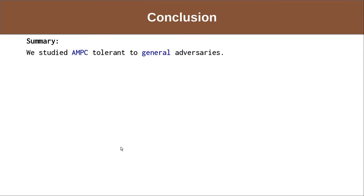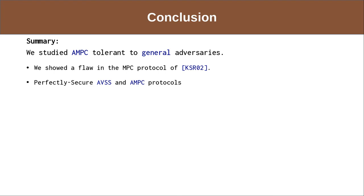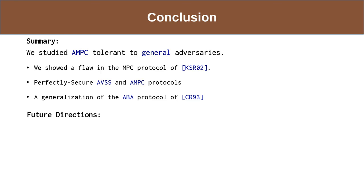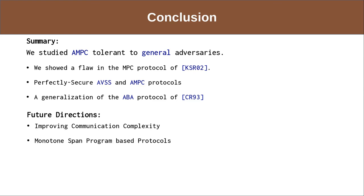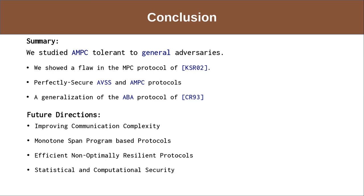To summarize, we studied asynchronous MPC tolerant to general adversaries. We showed that the MPC protocol of Kumar et al. is flawed and presented perfectly secure AVSS and AMPC protocols. We also showed a generalization of the asynchronous Byzantine agreement protocol of Canetti et al. Future directions include improving the communication complexity of our protocols, constructing protocols based on secret sharing schemes from monotone span programs, constructing efficient protocols with non-optimal resilience, and exploring the settings of statistical and computational security. Thanks everyone.